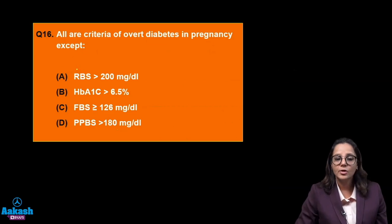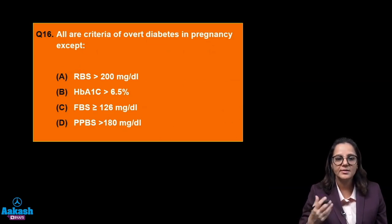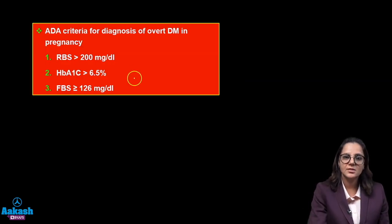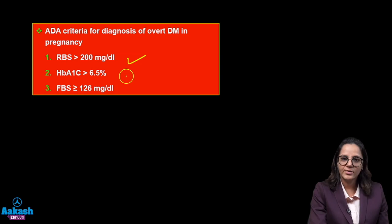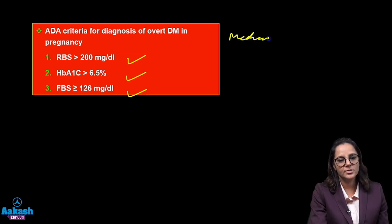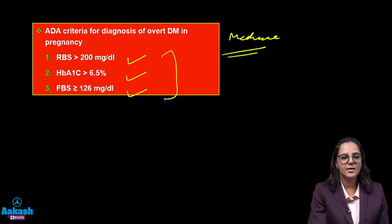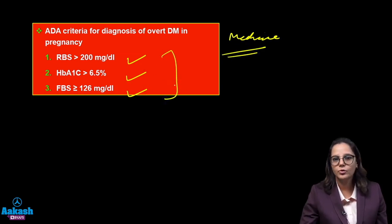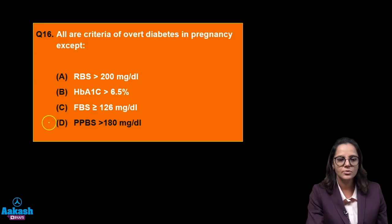All are criteria of overt diabetes in pregnancy. Overt diabetes means the patient was having diabetes before she got pregnant. The criteria: RBS more than 200, HbA1c more than 6.5, fasting blood sugar more than 126. This is also a medicine question asked repeatedly — you just need to memorize these values.